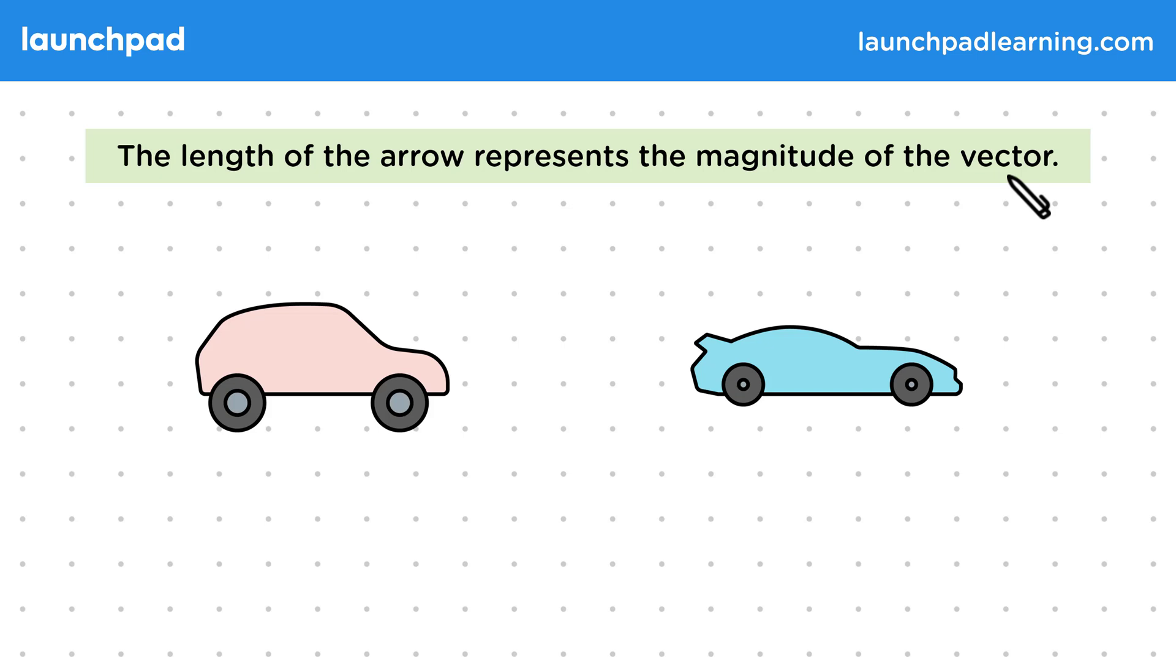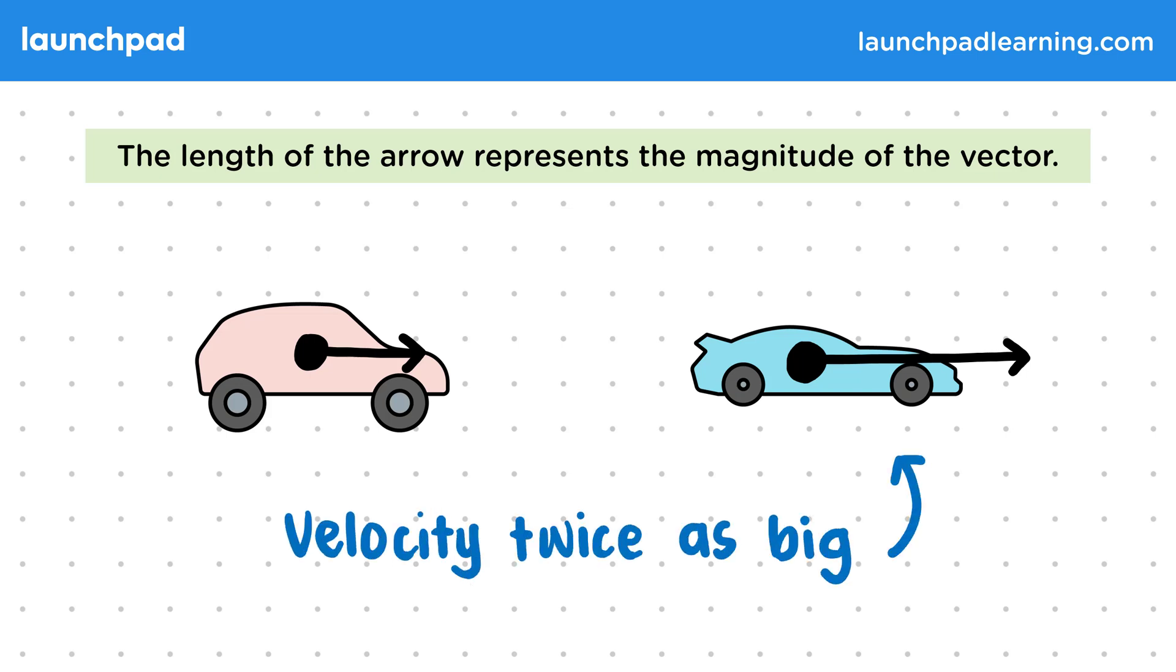So let's look at two cars as another example. One is slow and one is fast. This is represented by two different sized arrows. The velocity of the car on the right is twice as big, so the arrow is twice as long.